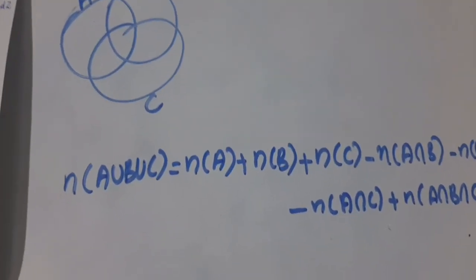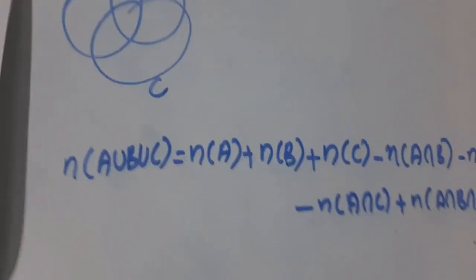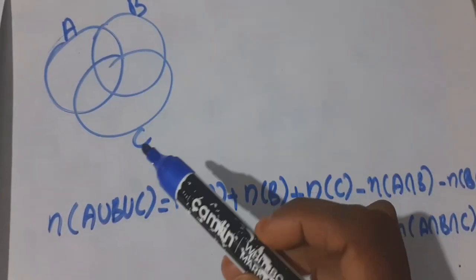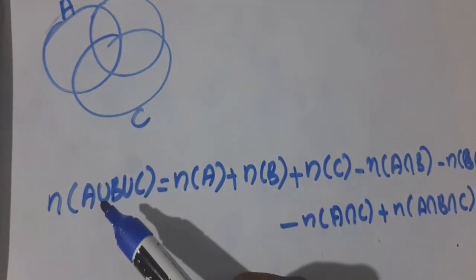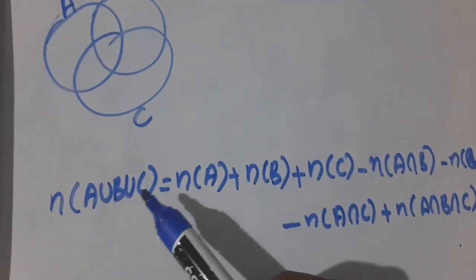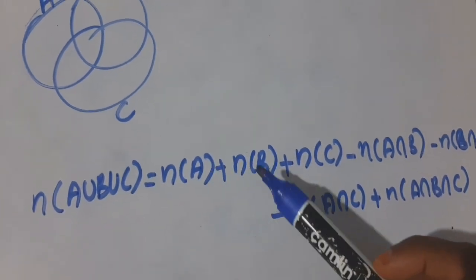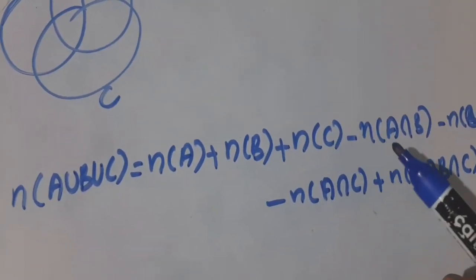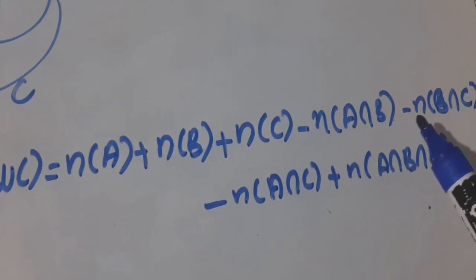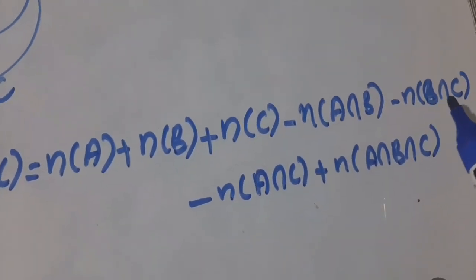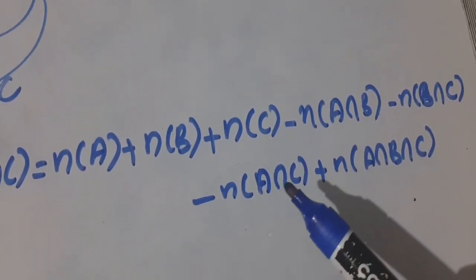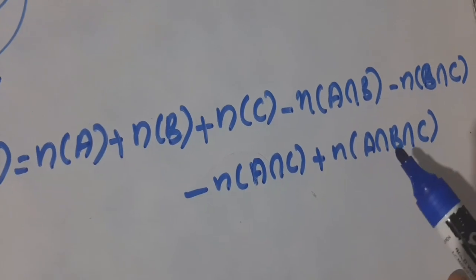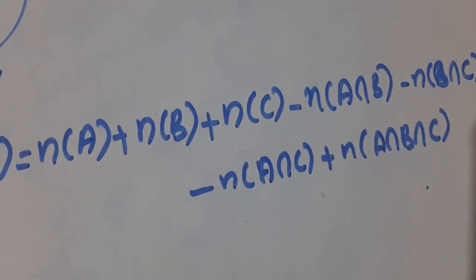Next, the third formula: for sets A, B, C — n(A ∪ B ∪ C) = n(A) + n(B) + n(C) − n(A ∩ B) − n(B ∩ C) − n(A ∩ C) + n(A ∩ B ∩ C).